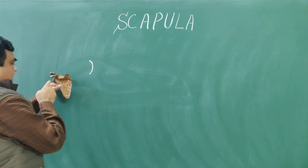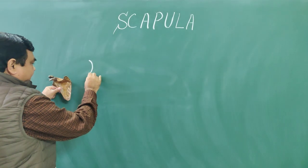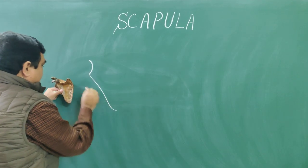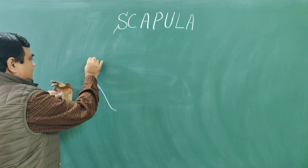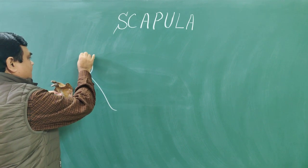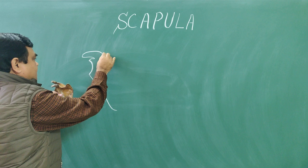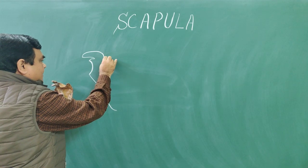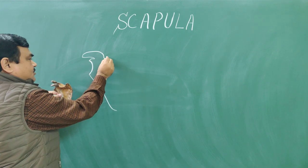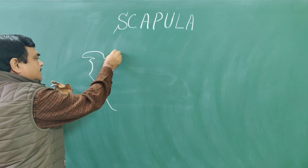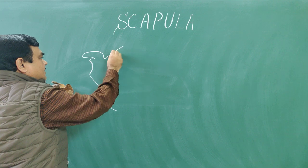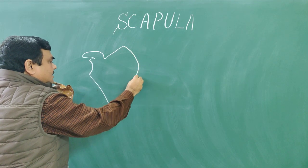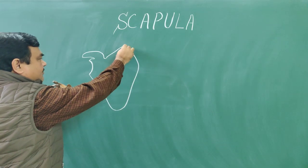This is the glenoid cavity of the scapula. This is the lateral border. This is the coracoid process of the scapula. And here is the suprascapular notch. This is the medial border, from here.